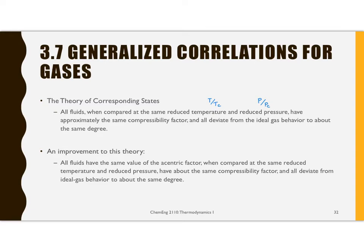There is an improvement to this, that all fluids having the same value of acentric factor, when compared at the same reduced temperature and reduced pressure, have about the same compressibility factor, and all deviate from the ideal gas behavior to about the same degree. This acentric factor is defined as omega or the acentric factor is negative 1 minus the log base 10 of the vapor pressure when the reduced temperature is 0.7 divided by the critical pressure.